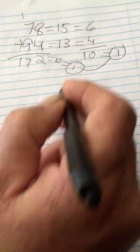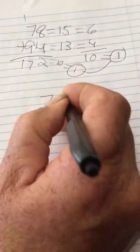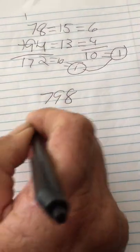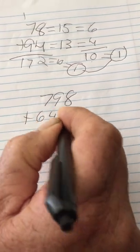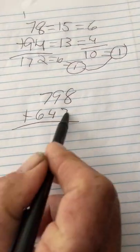We can take any number at all, no matter how big and no matter how small, and this works every time. Let's take a random number like 798 and add 647 to that. We can add these up.